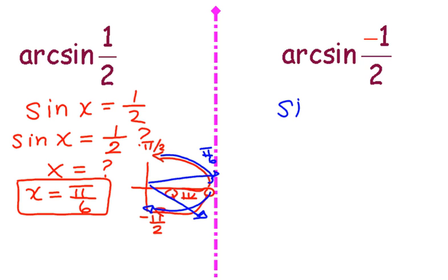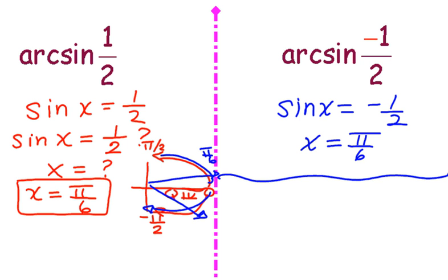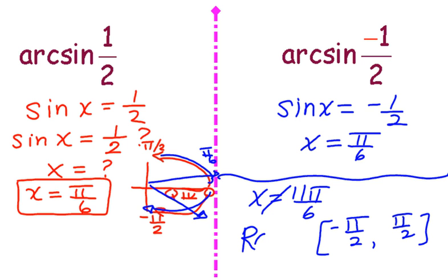So here, if sin x is negative 1/2, then x has to be negative π/6. Now I want you to be really careful because some students will say that x is 11π/6, but this cannot be the case. And that's because the range of inverse sine has been restricted, so I can only get values that are between negative π/2 and π/2. Make sure you stay inside your range.